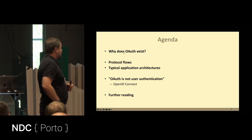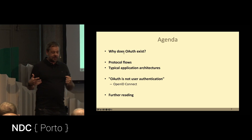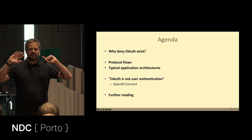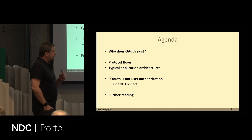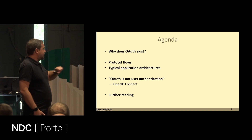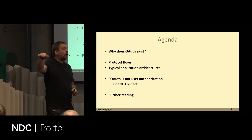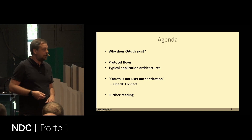The agenda: first, why does OAuth exist? Then we're going to talk about what they call protocol flows — there are really two left. OAuth started with five different flows in the original spec, and there are two left, which means the other three don't matter anymore. Then we're going to talk about typical applications you would build with these flows. And then we'll cover why OAuth is not authentication. And finally, I'll give you some pointers to further reading.